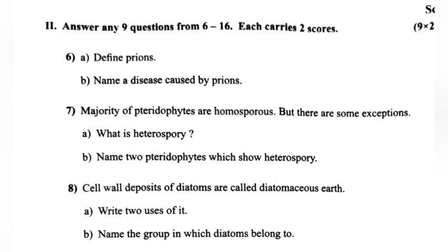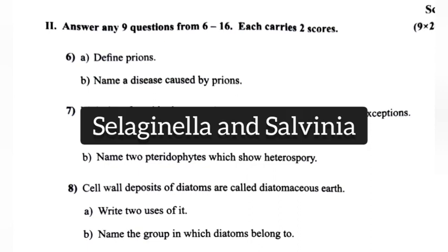Question 9: Name two pteridophytes which show heterospory. Answer: Selaginella and Salvinia.